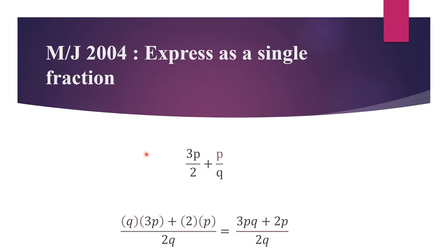So, May-June 2004, the question asks: express as a single fraction, 3P over 2 plus P over Q. The first thing that we will do is to find the LCM — the lowest common multiple. We find the LCM by looking at the two denominators, one being 2 and the other being Q. So the LCM would be 2 multiplied by Q, giving us 2Q.